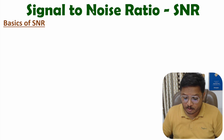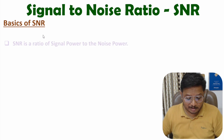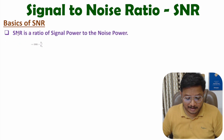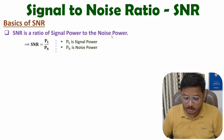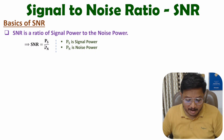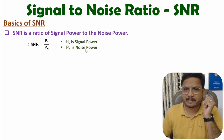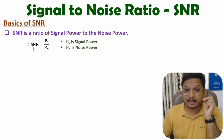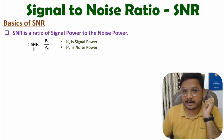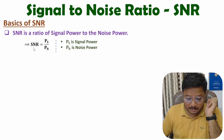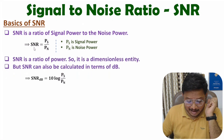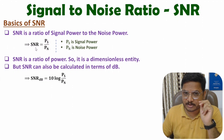SNR means signal to noise ratio. When you calculate SNR, it is a ratio of signal power to the noise power. So SNR is PS divided by PN, where PS is signal power and PN is noise power. Based on this ratio, one can say SNR is a dimensionless entity — it has no dimension.